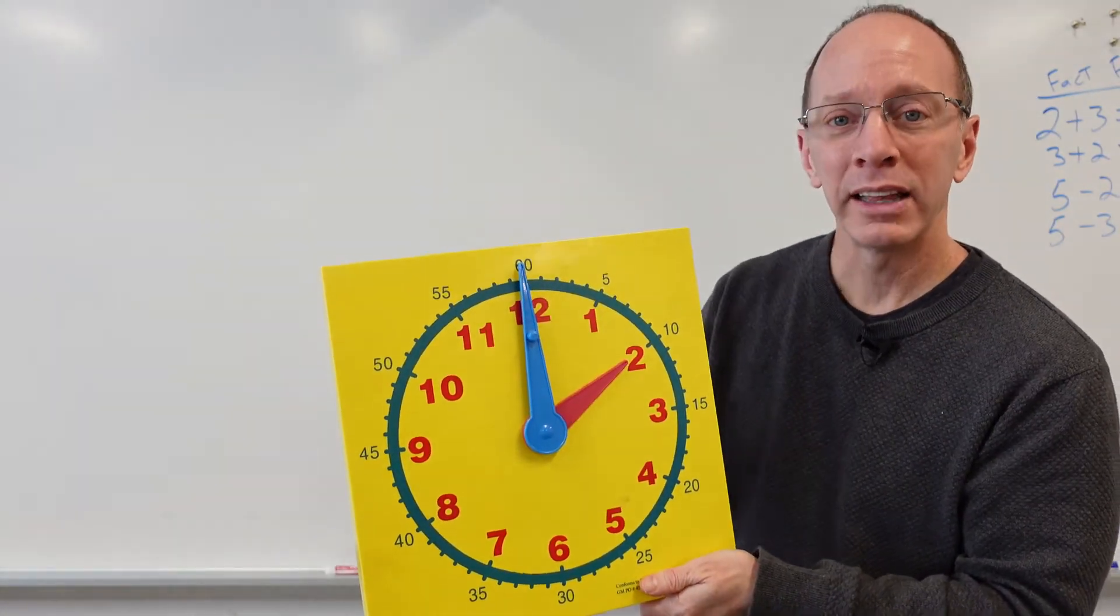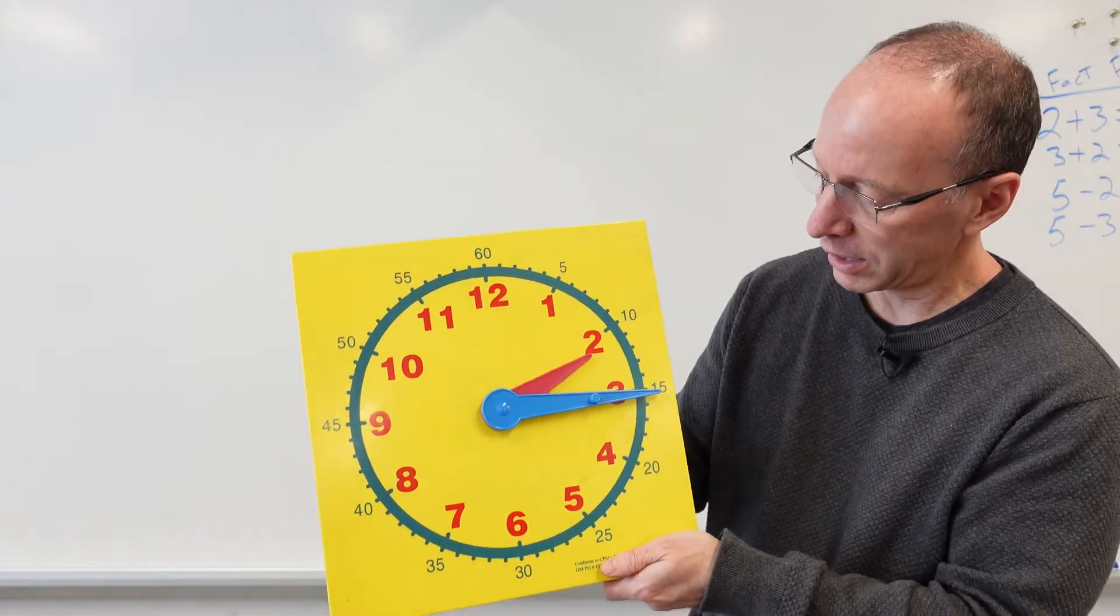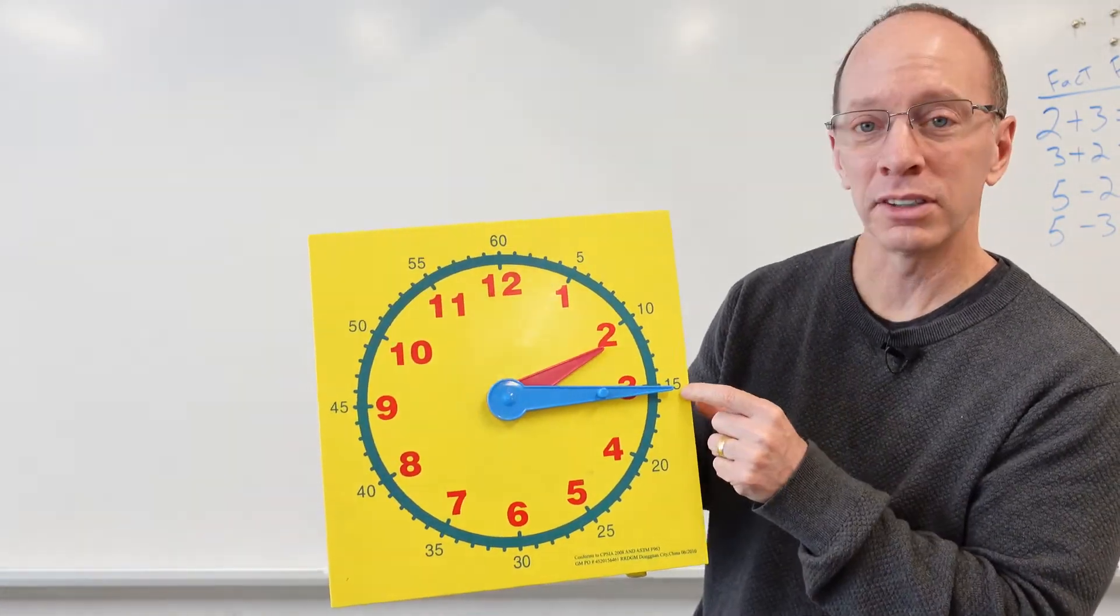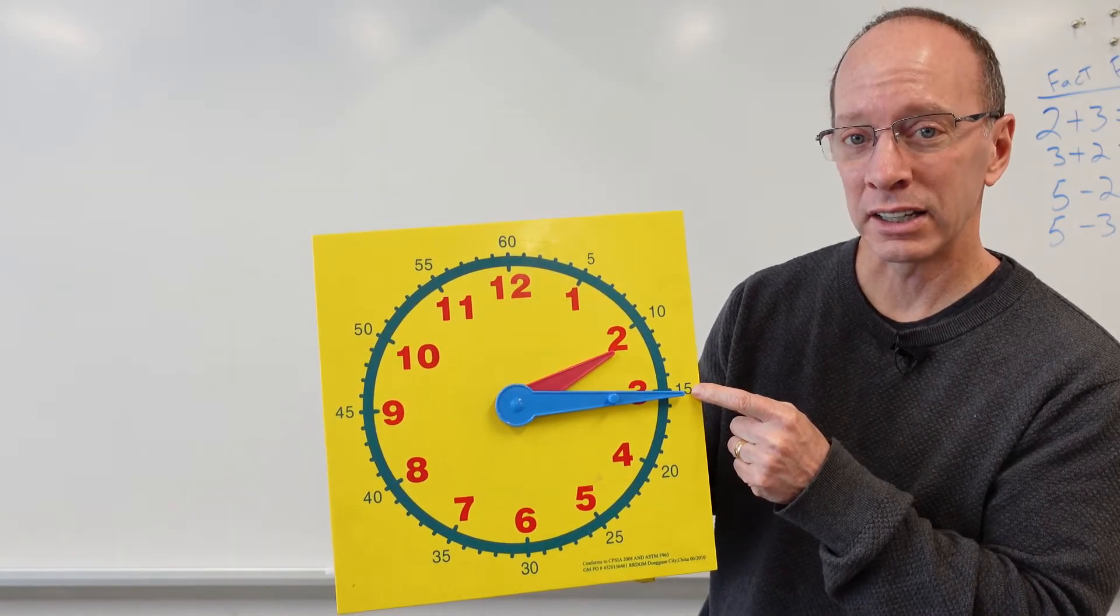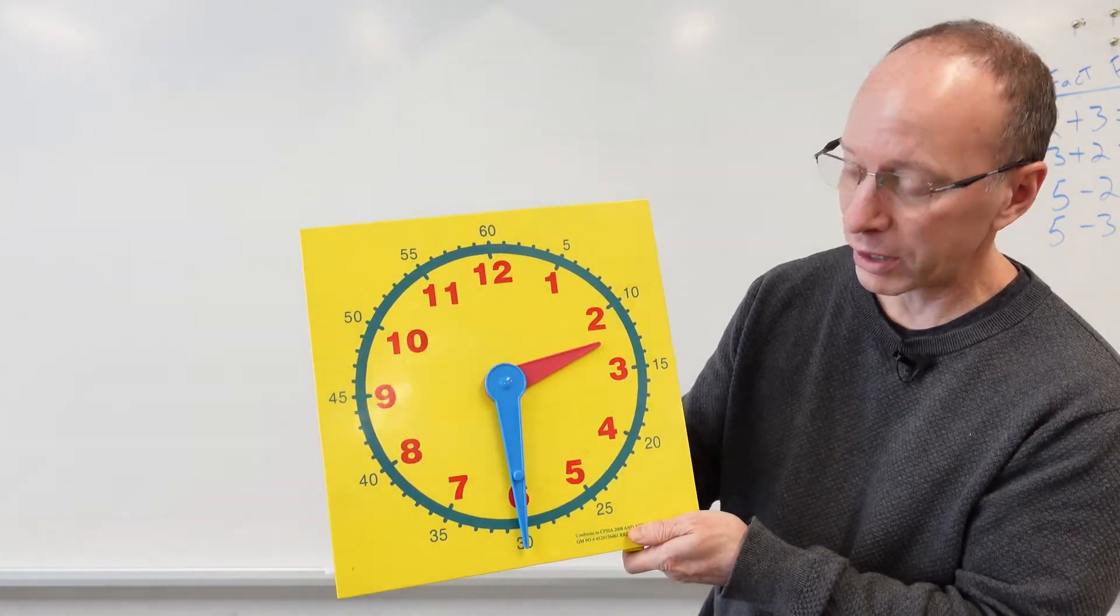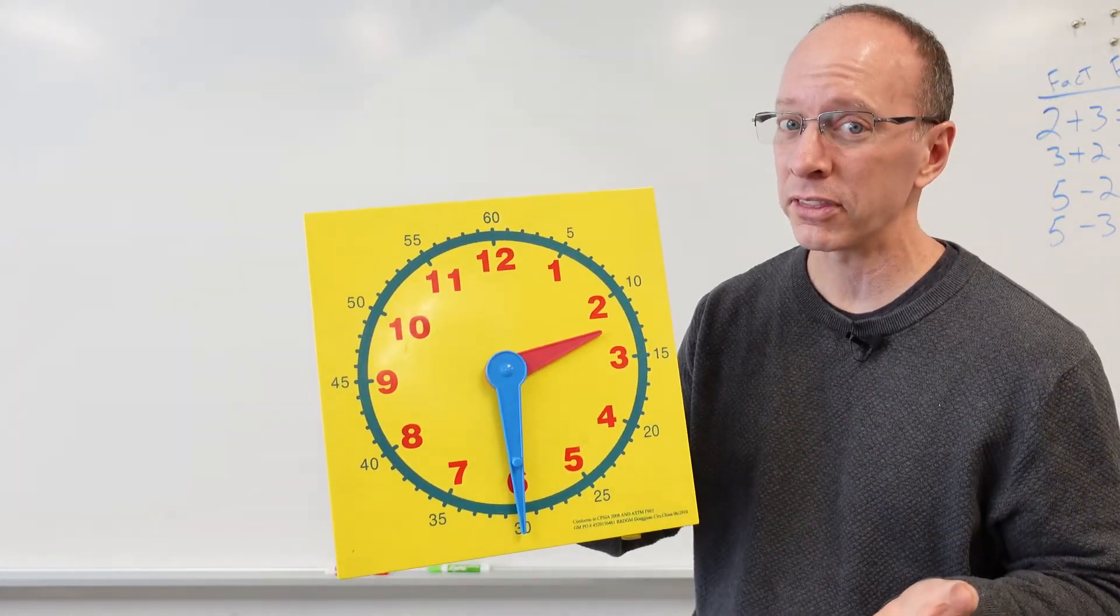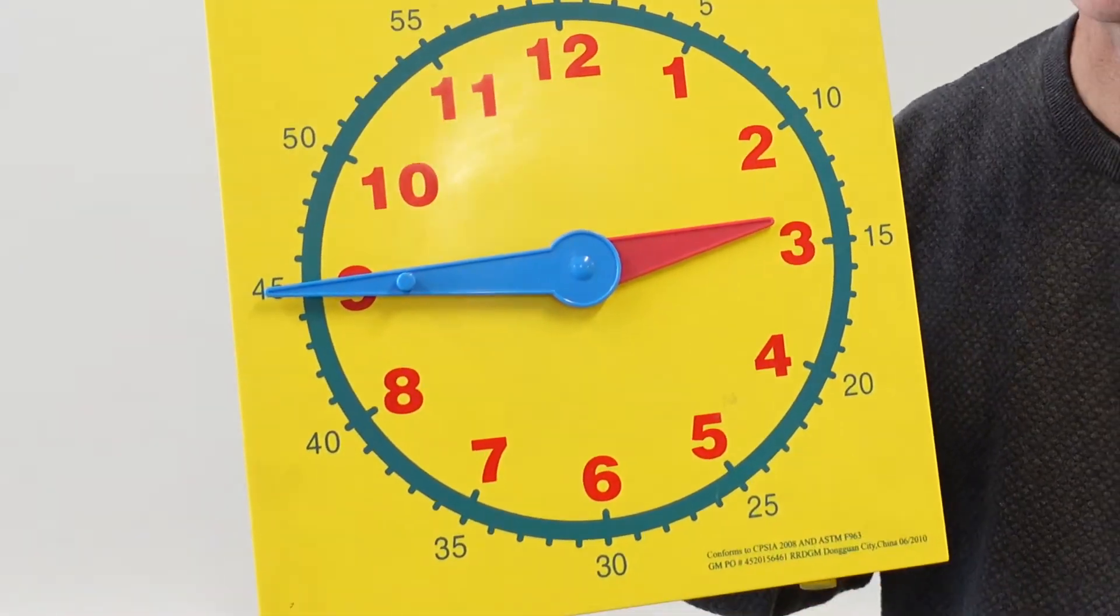Now, when we look at the man hand or the minute hand right here, if it is pointing up, that means it's something o'clock. If the minute hand or the man hand is pointing to the side here, this is something 15. So, if it's pointing toward the 3, it's something 15. If it's pointing down, it's something 30. And if it's pointing toward the 9, it's something 45.